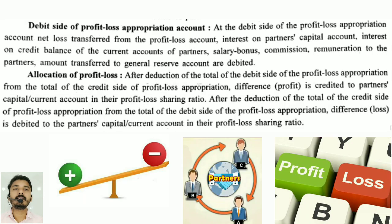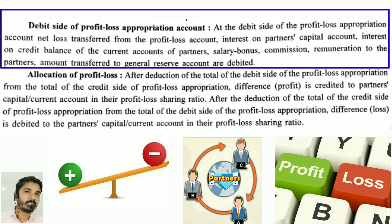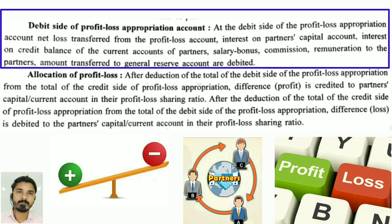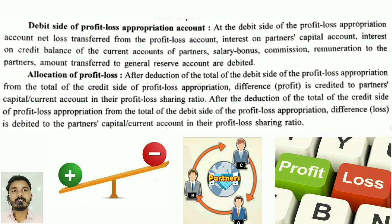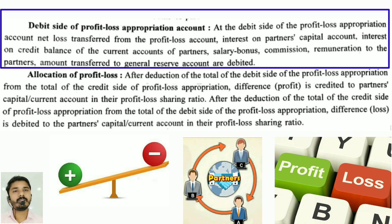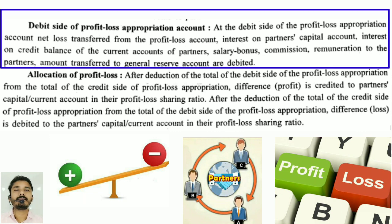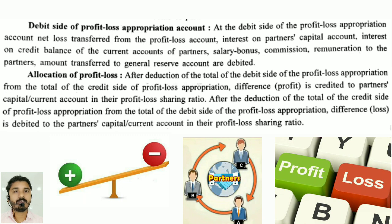At the debit side of the Profit and Loss Appropriation Account: net loss transferred from the Profit and Loss Account to partners' capital account, interest on credit balance of the current account of partners, salary, bonus, commission, and remuneration to the partners are debited.